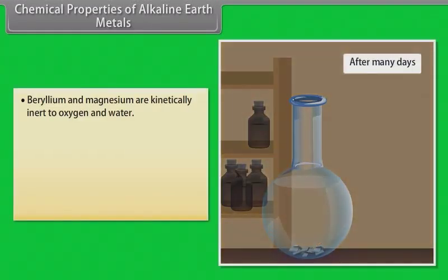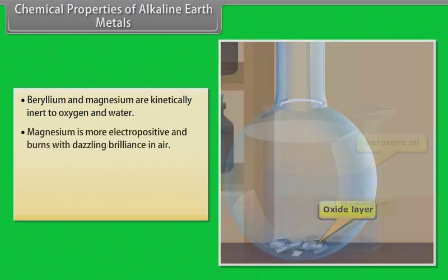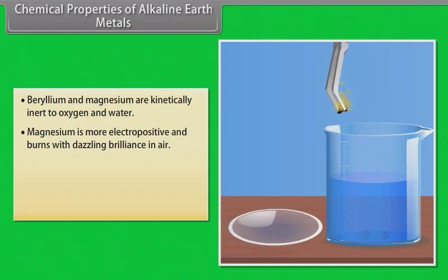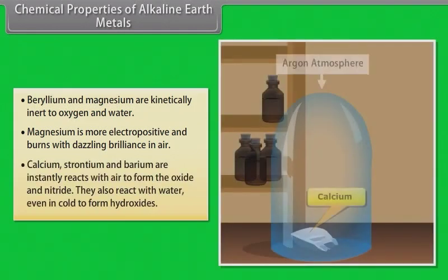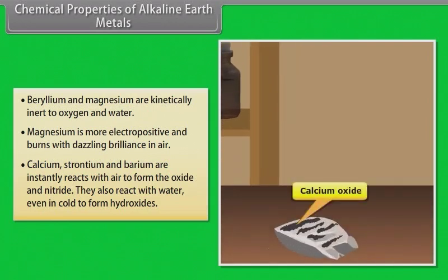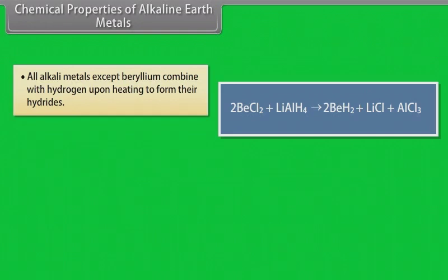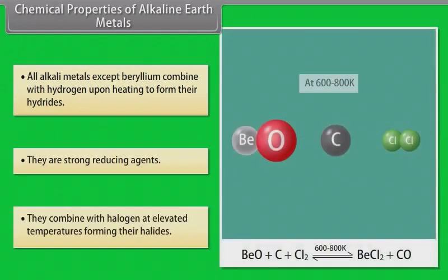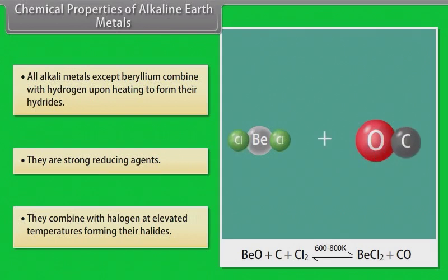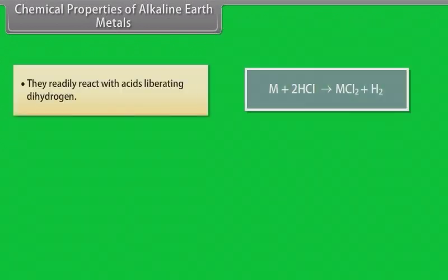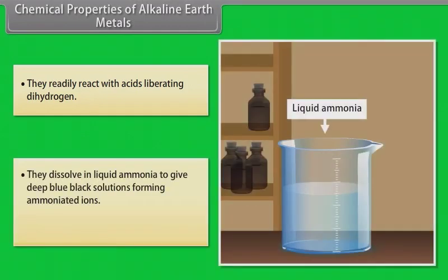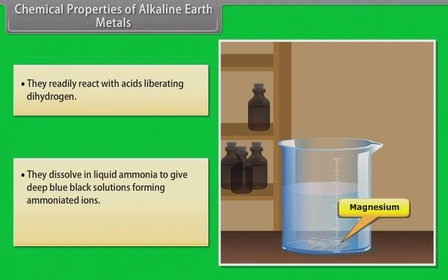Chemical properties of alkaline earth metals. Beryllium and magnesium are kinetically inert to oxygen and water. Magnesium is more electropositive and burns with dazzling brilliance in air. Calcium, strontium and barium react instantly with air to form the oxide and nitride. They also react with water, even in cold, to form hydroxides. All alkaline earth metals except beryllium combine with hydrogen upon heating to form their hydrides. They are strong reducing agents, combine with halogens at elevated temperatures forming halides, readily react with acids liberating dihydrogen, and dissolve in liquid ammonia to give deep blue-black solutions forming ammoniated ions.